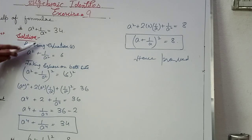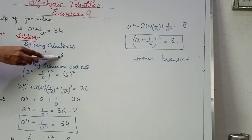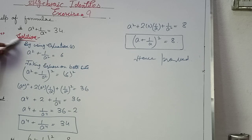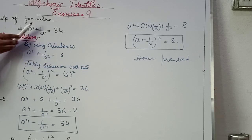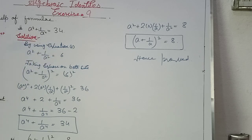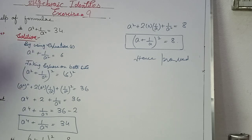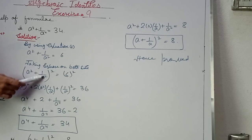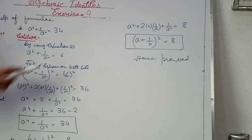We have a² + 1/a² = 6. We take square on both sides again, so (a² + 1/a²)² = 6² = 36.